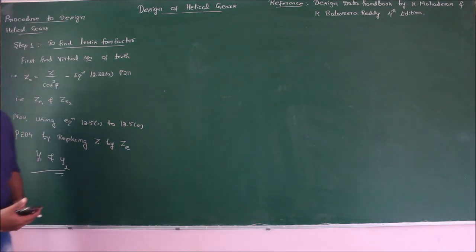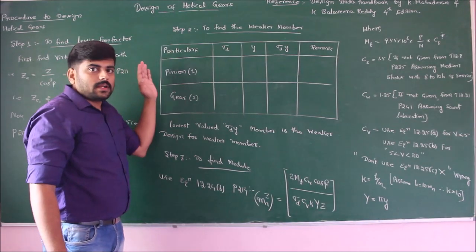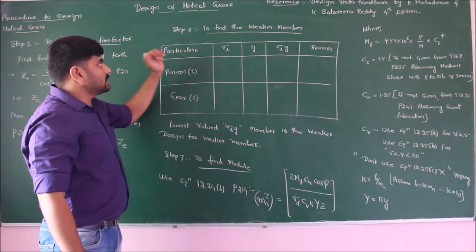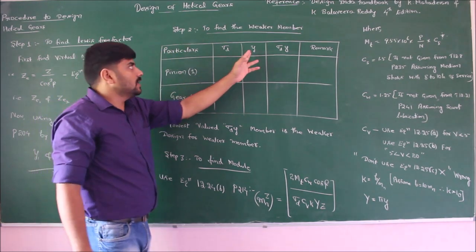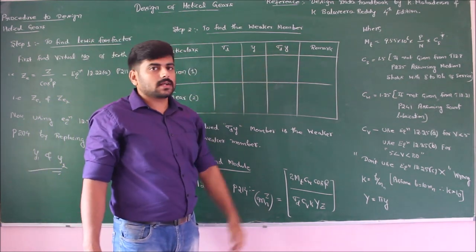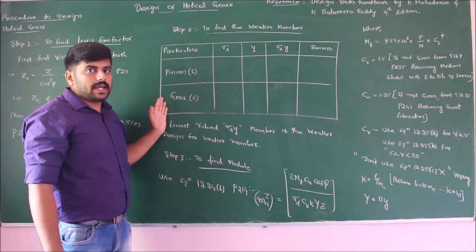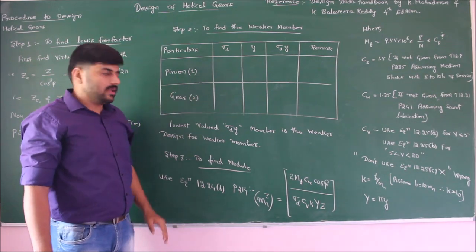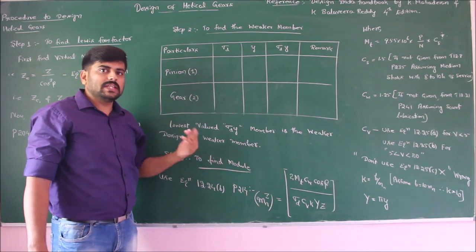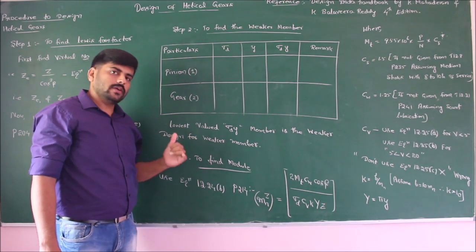Moving on to step 2 — to find the weaker member. As we did in spur gear design, make a table with: particulars, allowable static strength, Lewis's form factor, product of these two, and the remark. Under particulars, we have pinion and gear. Fill up the respective values. The lowest value of sigma_d·y will be the weaker member, and design should be made for the weaker member.